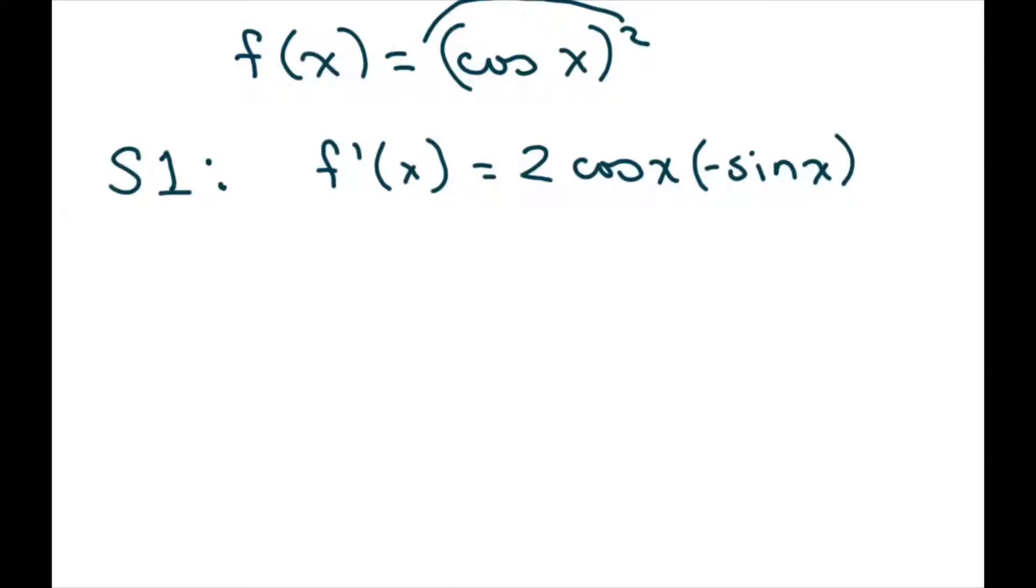And then simplify this, and we get negative 2 cosine x sine x.